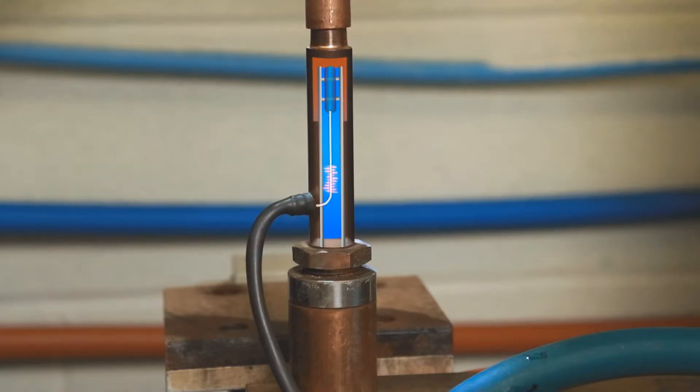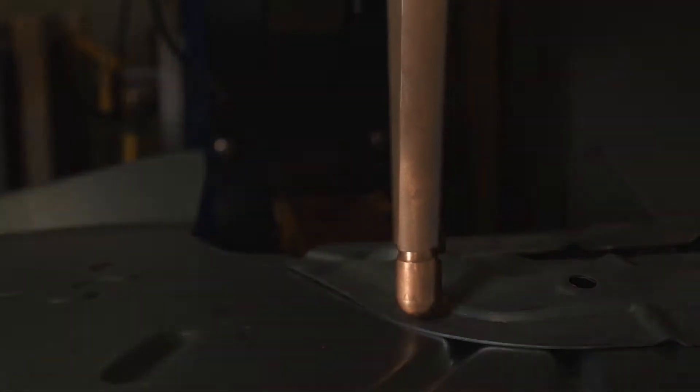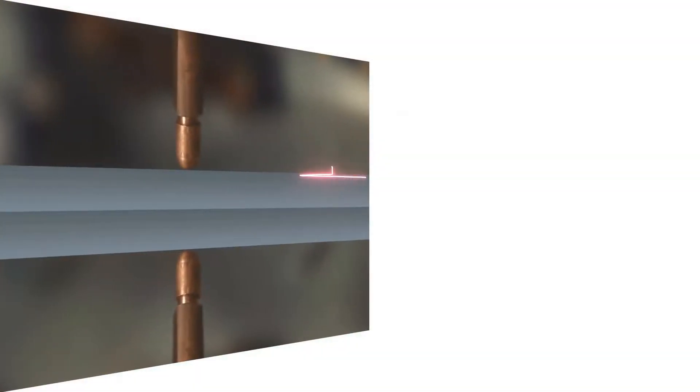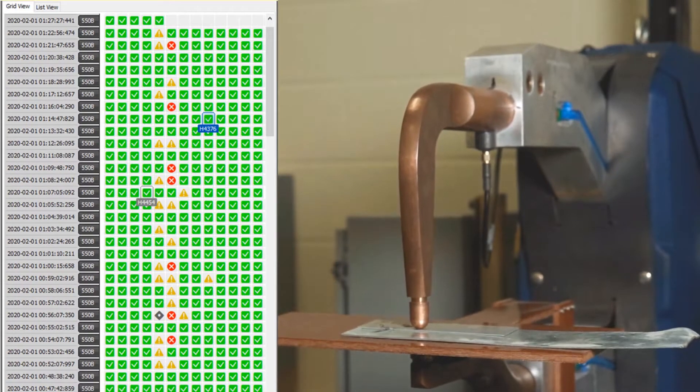The signal carries valuable information about the weld as it is forming back through the Rewa system. Rewa is the first system of its kind to offer real-time monitoring of spot welds during the formation of the nugget.